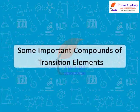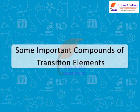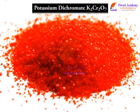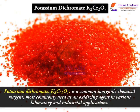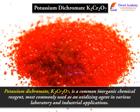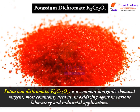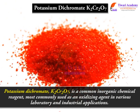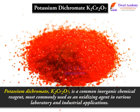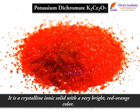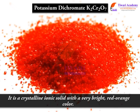Some Important Compounds of Transition Elements. Potassium dichromate, K₂Cr₂O₇, is a common inorganic chemical reagent, most commonly used as an oxidizing agent in various laboratory and industrial applications. It is a crystalline ionic solid with a very bright red-orange color.